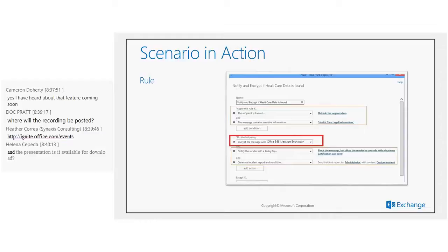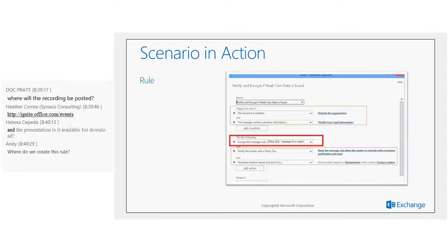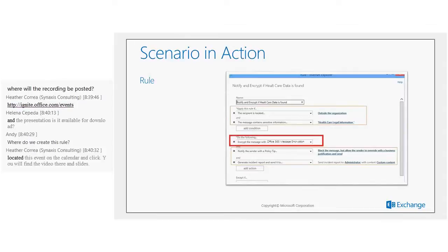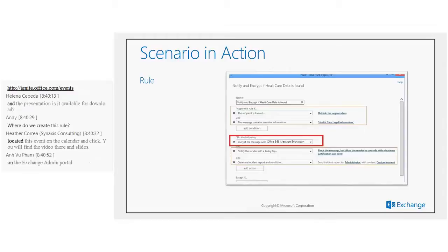Based on those two conditions matching, a couple of actions are configured: notifying the user with a policy tip to educate them before sending, generating an incident report to track sensitive information sent outside, and — most importantly — encrypting that message with Office 365 Message Encryption. This is now a single action within the action pane, which previously would have required much more work.